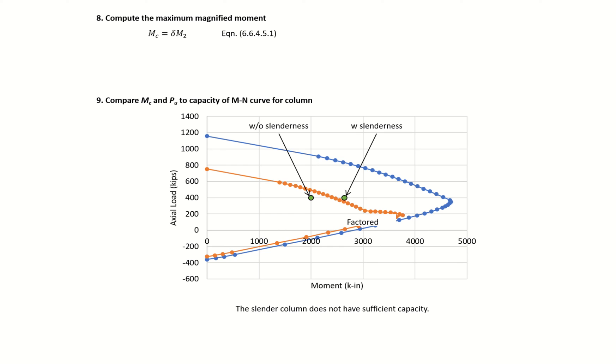Our final step is to compute the maximum magnified moment. This is going to be our moment magnifier, which we found on the previous slide, 1.33, times our M_2, which is just M_u here, 2,000 kip-inches.